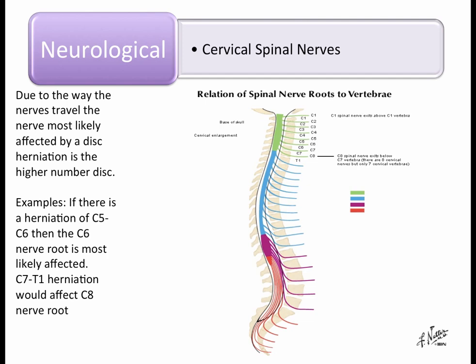Recall how spinal nerves in the cervical spine differ: C1 exits above C1, C2 above C2, and so forth. Due to this anatomy, the rule for identifying the affected nerve root is the same as the lumbar spine — the herniated disc compresses the more inferior nerve root. For example, a C5-C6 herniation affects the C6 nerve root; a C7-T1 herniation affects the C8 nerve root. Always look for the most inferior nerve of the disc levels involved.